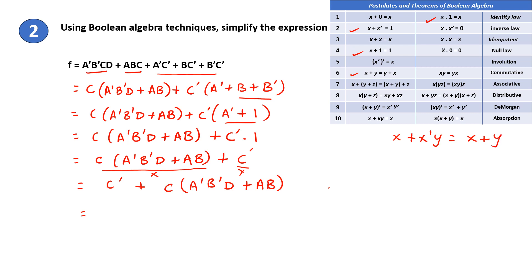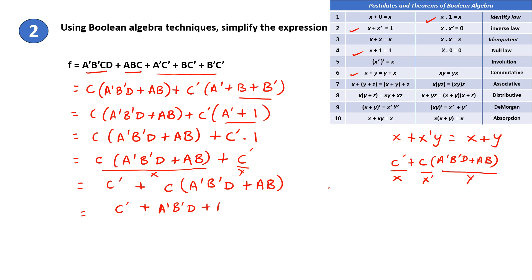Next, for this step I am using the rule X + X'Y = X + Y. Here C' is X, so X' will be C, and Y is A'B'D plus AB. This represents X, this represents X', and this represents Y. So the answer is X plus Y, where X is C' and Y is A'B'D plus AB. So this is the simplified Boolean expression.